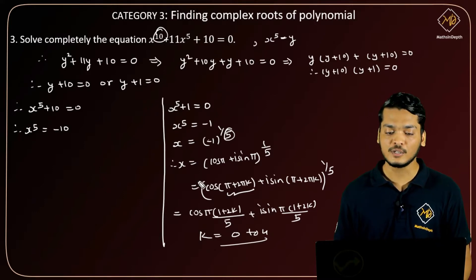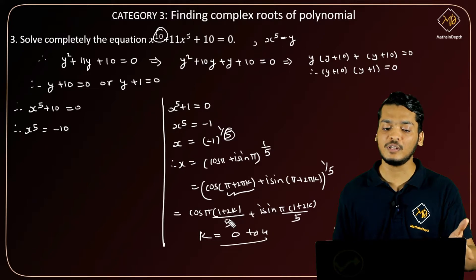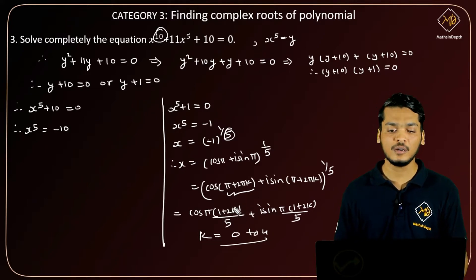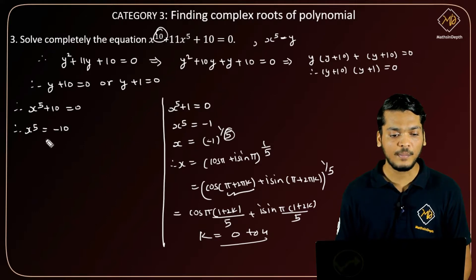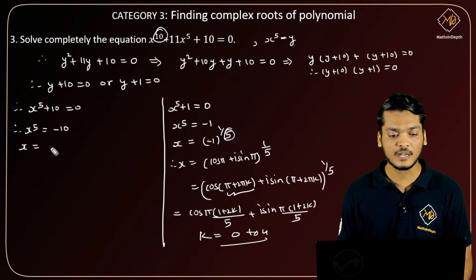from 0 to 4. So by putting k = 0, 1, 2, 3, 4, we get 5 different roots.